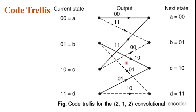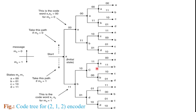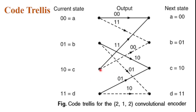For state C equal to 10, the outputs are 11 and 00. The output 11 is the M0 equal to 0 output, represented by the solid line, and the output 00 is the M0 equal to 1 output, represented by the dashed line.